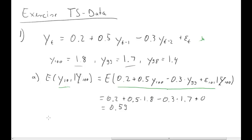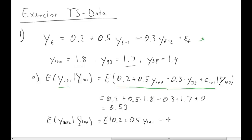Now the second forecast we want is the two-step ahead forecast: E[y(102) | I(100)]. We do exactly the same as before: 0.2 plus 0.5 times y(101) minus 0.3 times y(100) plus the error term at 102 given information at 100.